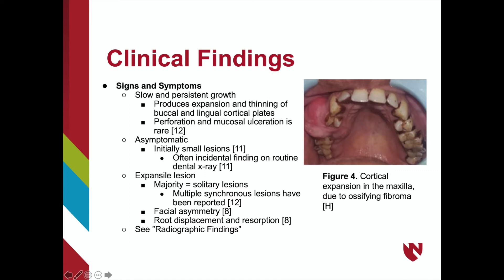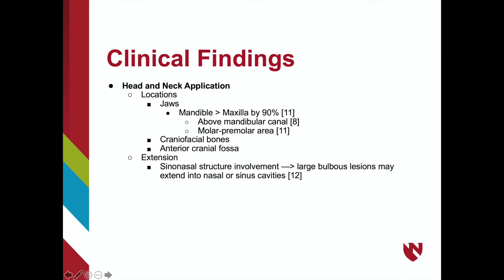For an accurate diagnosis, radiographs must be considered. As dental students, it's important to reflect upon the direct head and neck application of any pathology. Ossifying fibromas are found in the jaws, in the craniofacial bones, and in the anterior cranial fossa.